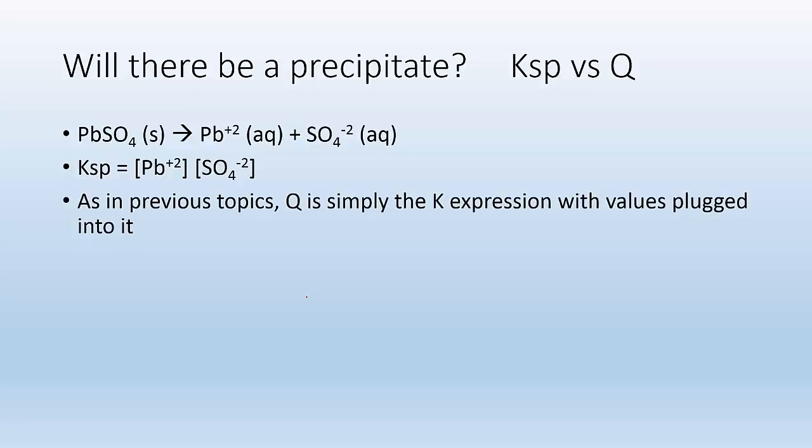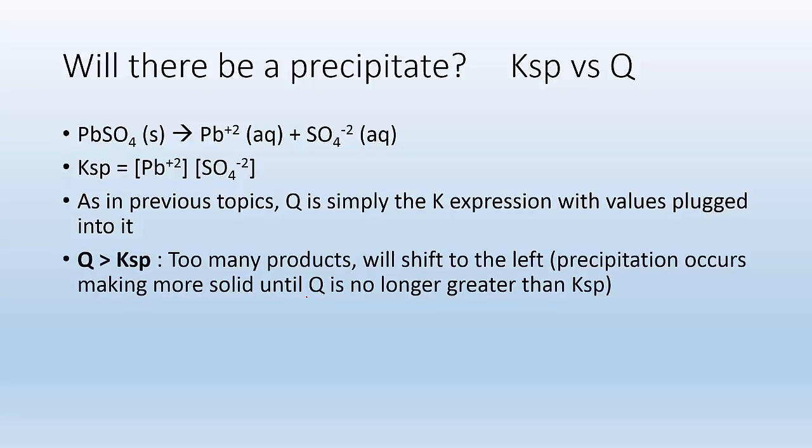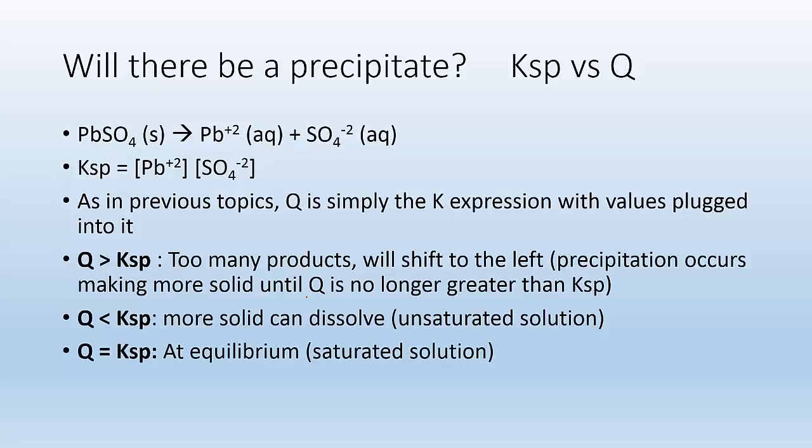As in previous topics, Q is simply K expression with values plugged into it. If Q is greater than Ksp, that tells us that we got too many products and we will shift to the left, which will make our solid, which is precipitation occurs, making more solid until Q is no longer greater than Ksp. If Q is less than the Ksp, we can dissolve more solid. We got an unsaturated solution. And if Q equals Ksp, you are at equilibrium, also known as having a saturated solution.